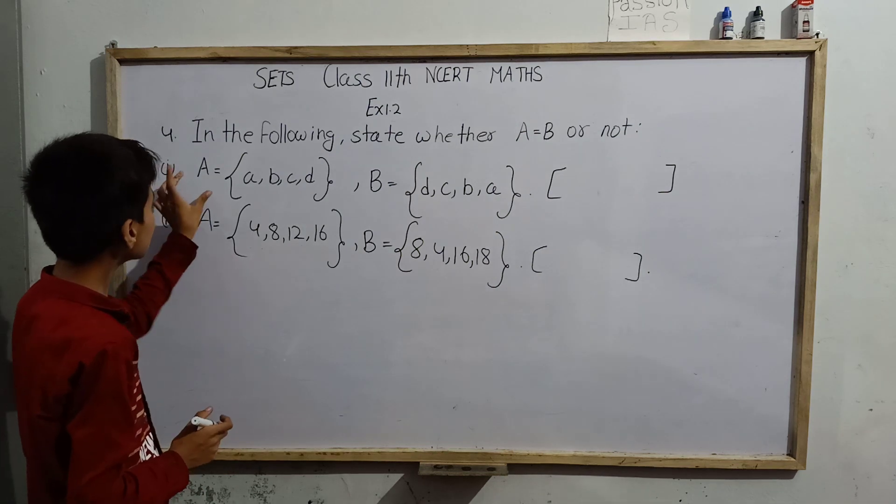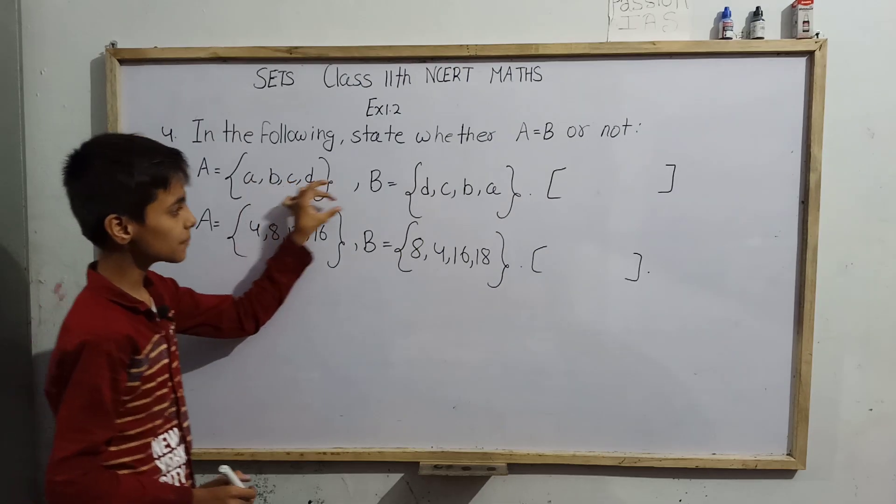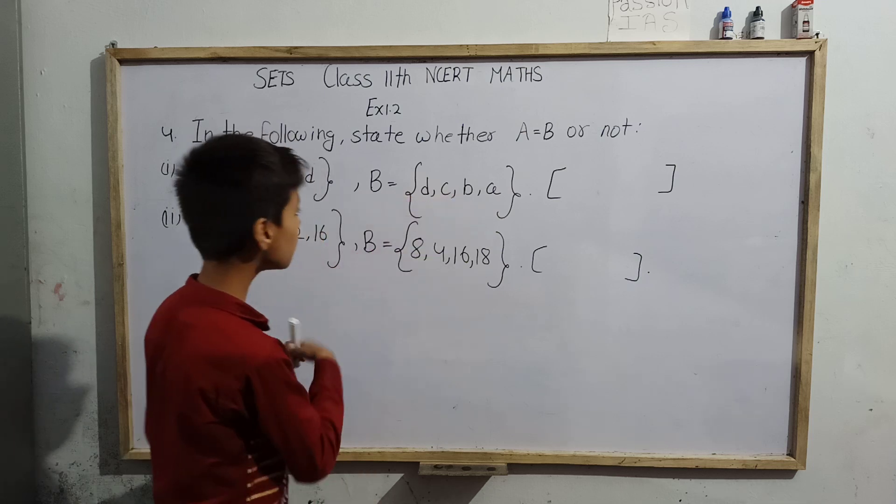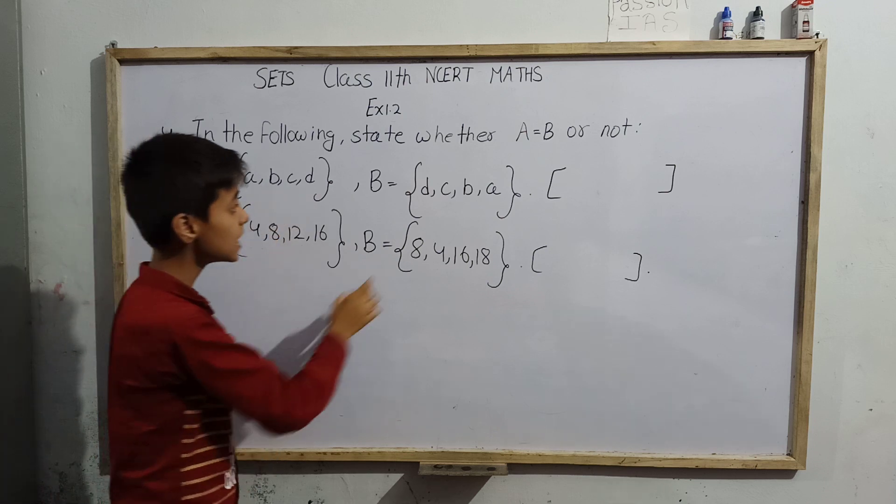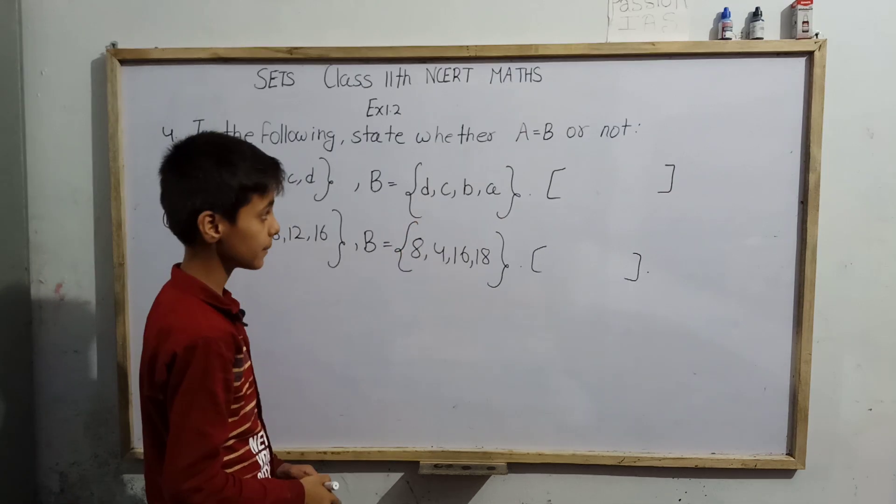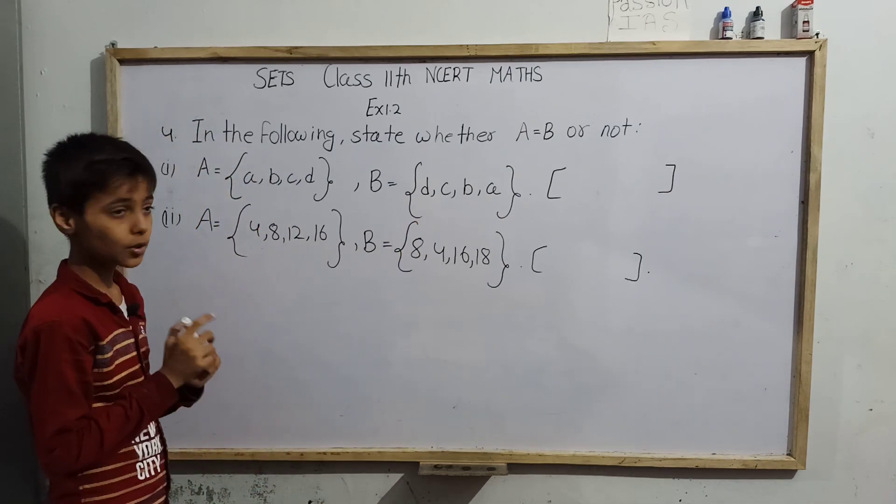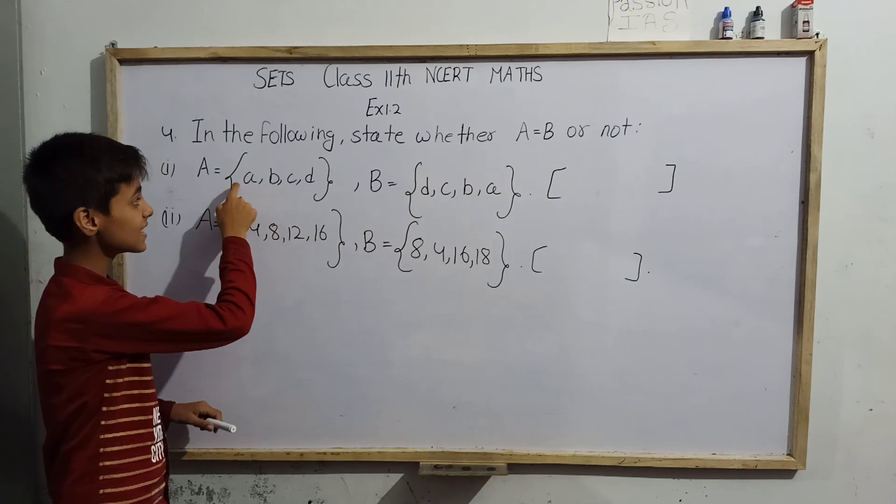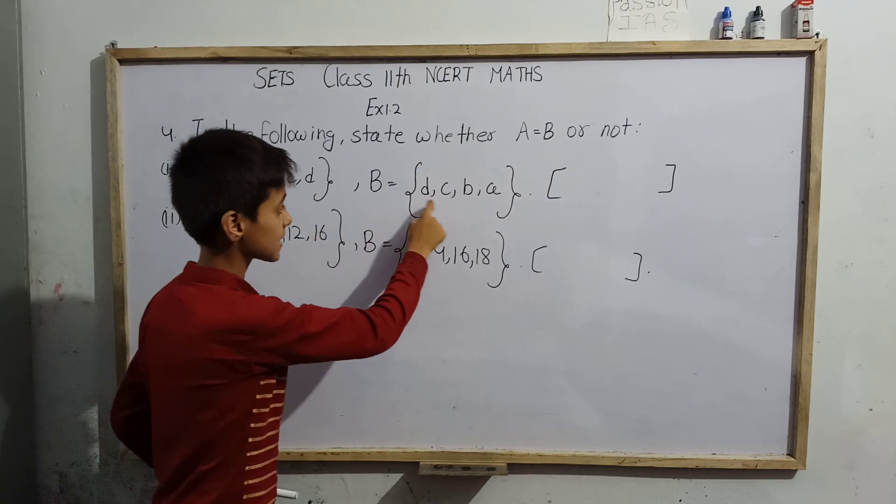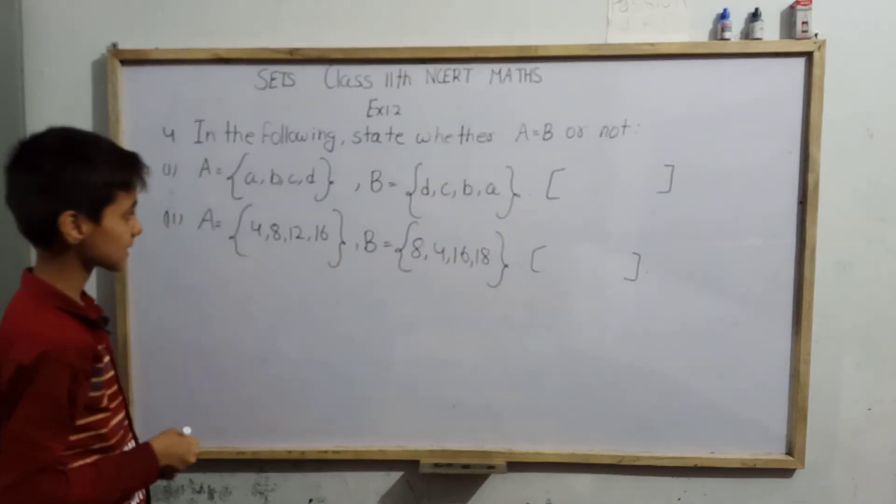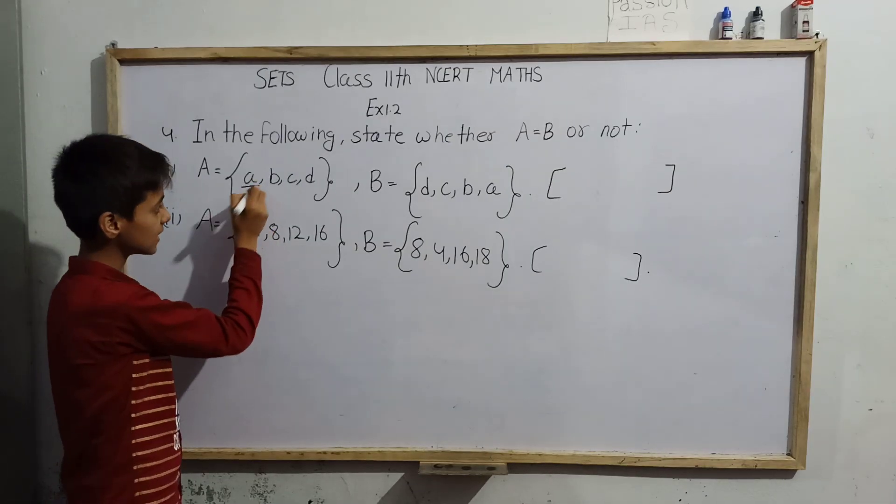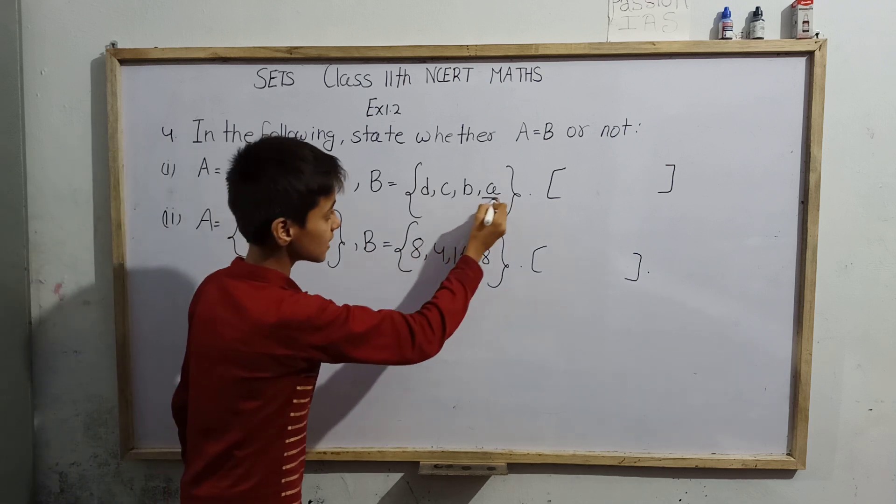So first we have A equals {a, b, c, d} and B equals {d, c, b, a}. So for proving them equal, we have to check that the number of elements of A should be equal to the number of elements of B. And one more thing: which elements are present in set A should be present in B, and whichever are present in B should be in A. Just like here, we can see A is present in this set and also in this set.